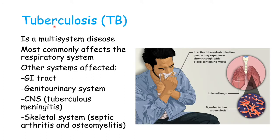Tuberculosis is a multi-system disease, meaning it will affect many organ systems in the body. However, it most commonly affects the respiratory system, termed pulmonary TB. Here, we can see an image of a lung infected with tuberculosis, and in a TB infection, it will most often infect the upper lobes of the lungs. We will talk about why that is in just a bit.